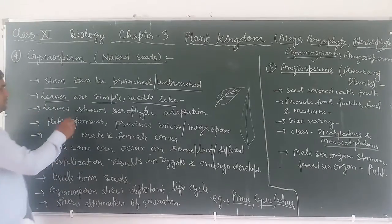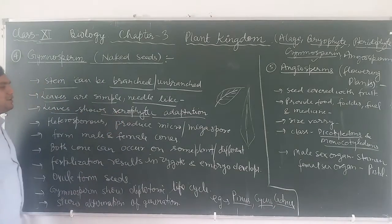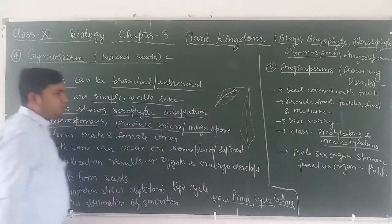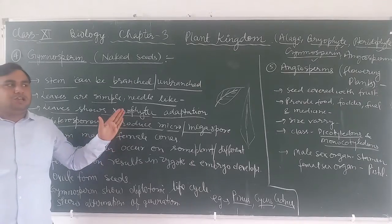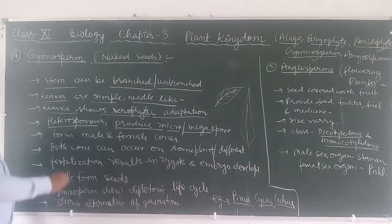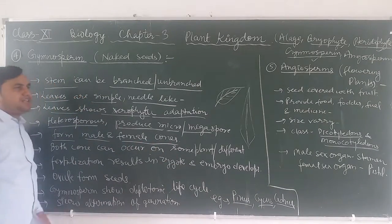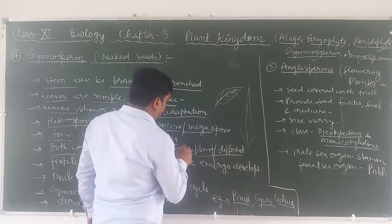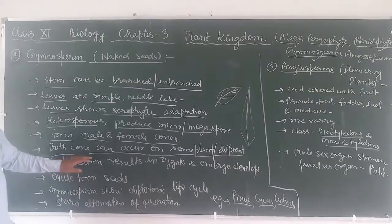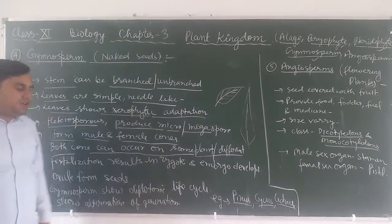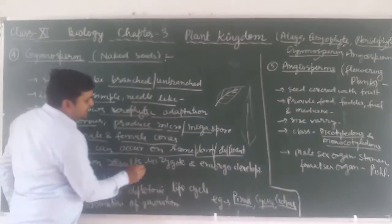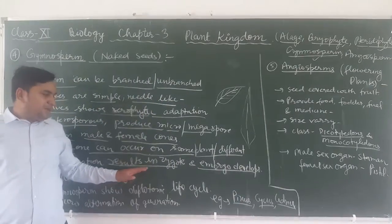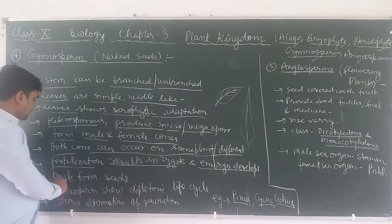Leaves show xerophytic adaptation. Gymnosperms are heterosporous — they produce both microspores and megaspores. They have male and female cones, and both cones can be present on the same plant or on different plants. Fertilization results in zygote formation and embryo development. The ovule forms the seed.